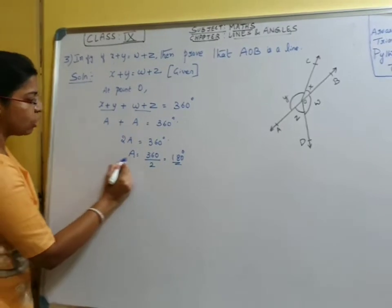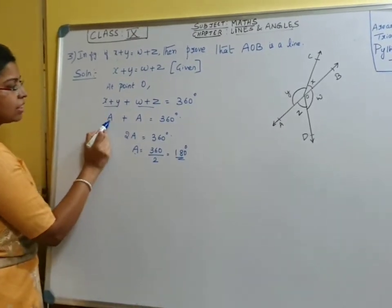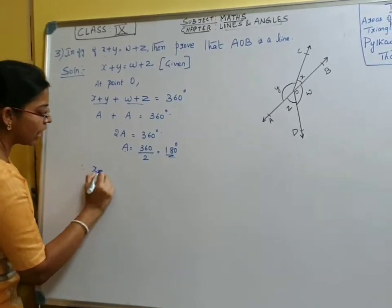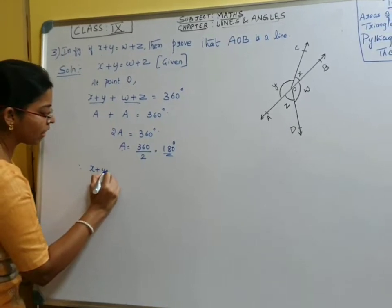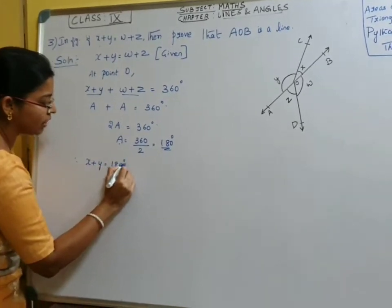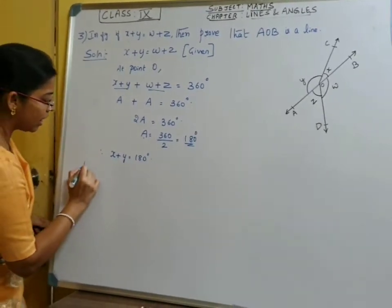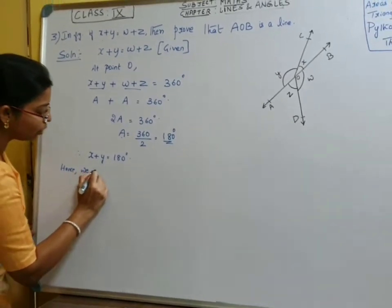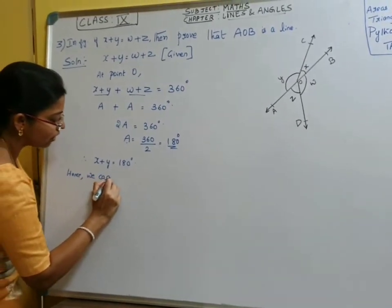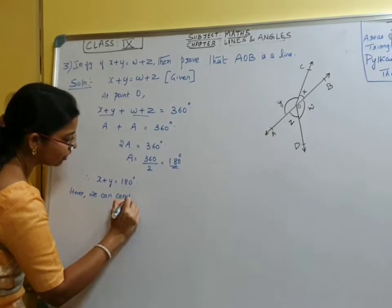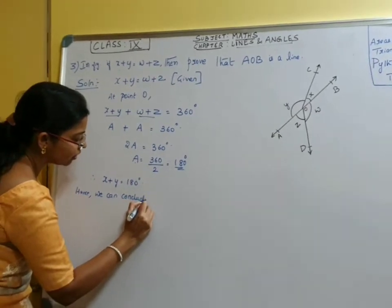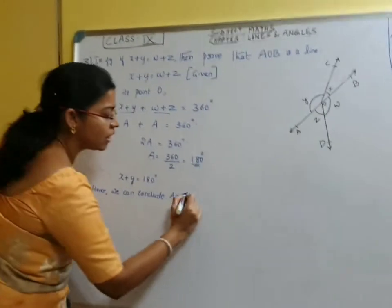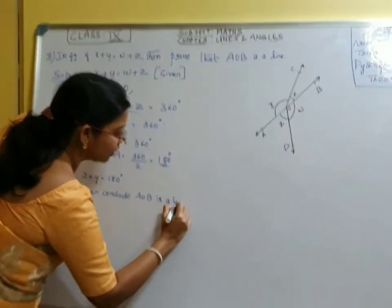A will be equal to 360 divided by 2, which is 180 degrees. Now we know what A is — A is x plus y. Therefore x plus y is equal to 180 degrees. Hence we can conclude that AOB is a straight line.